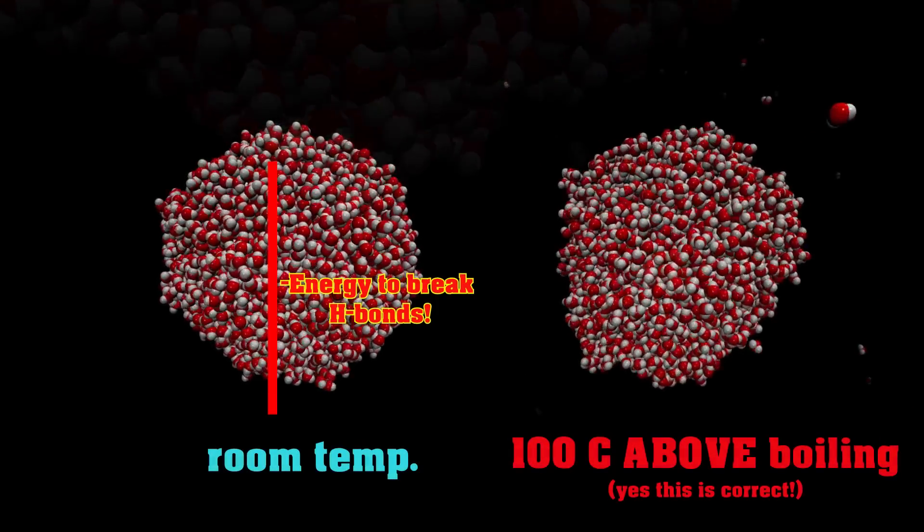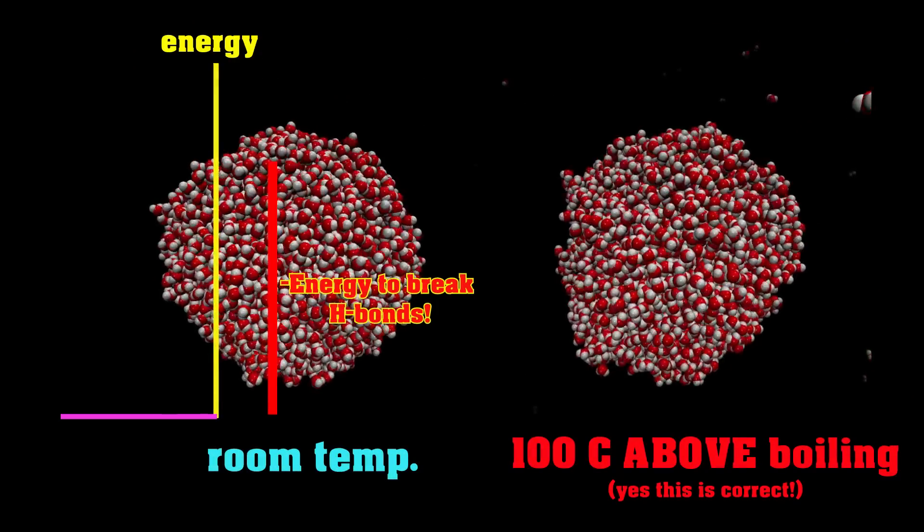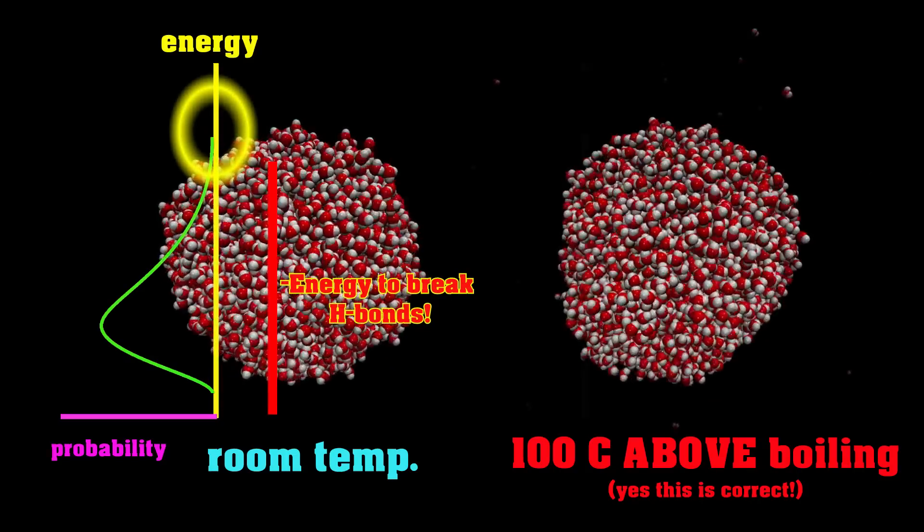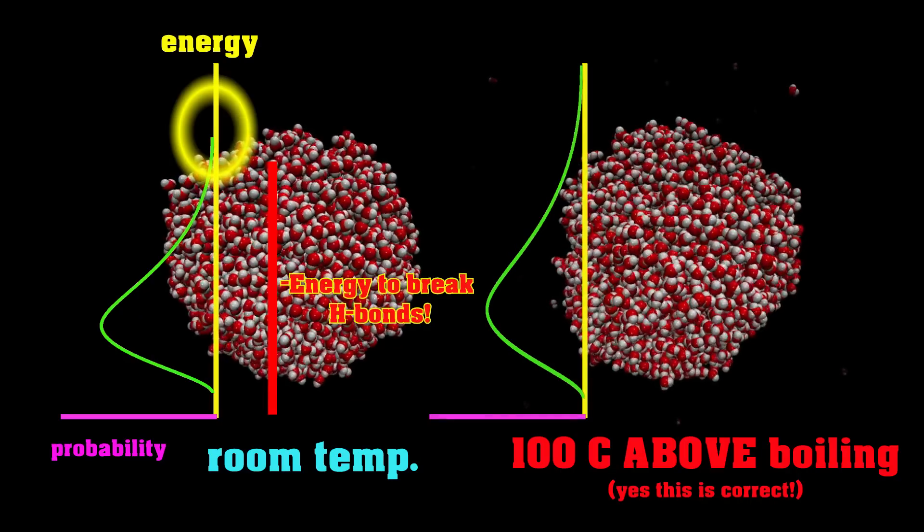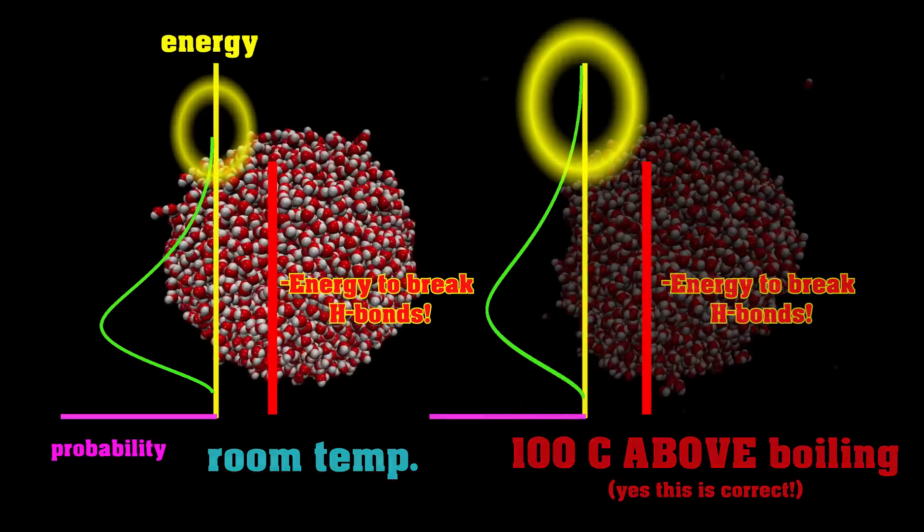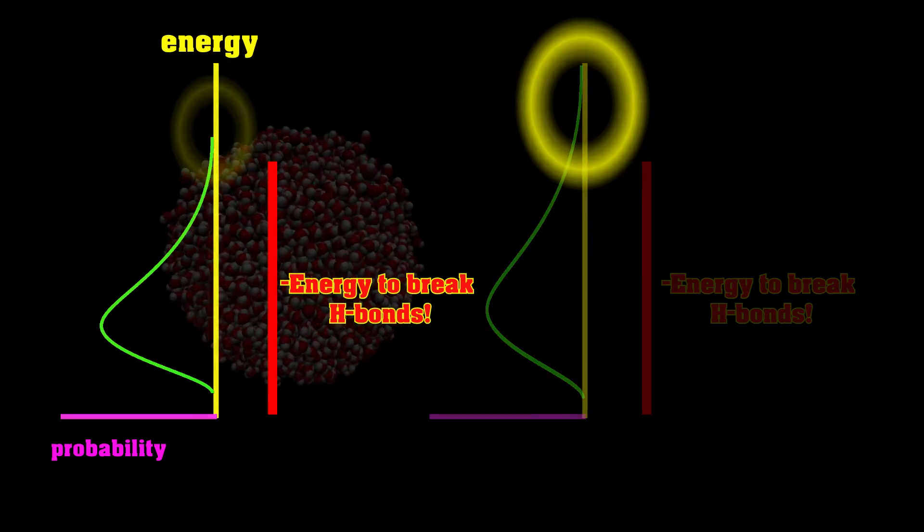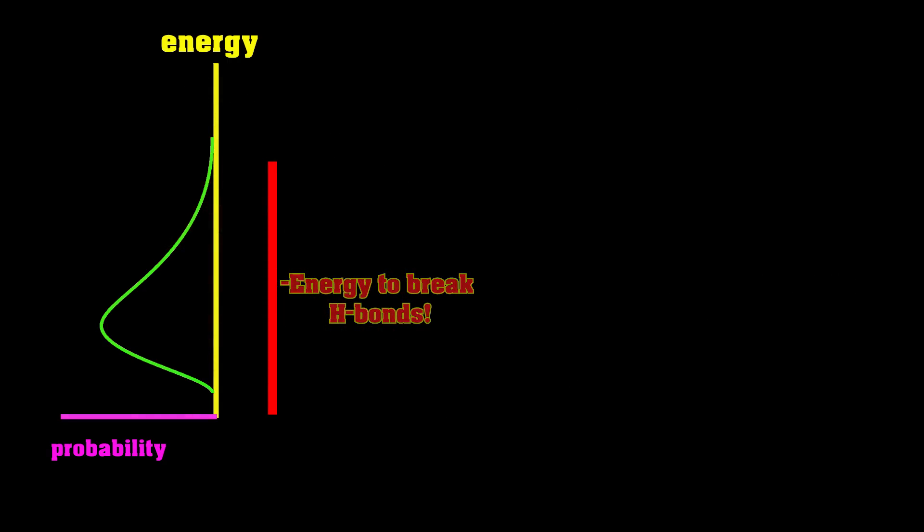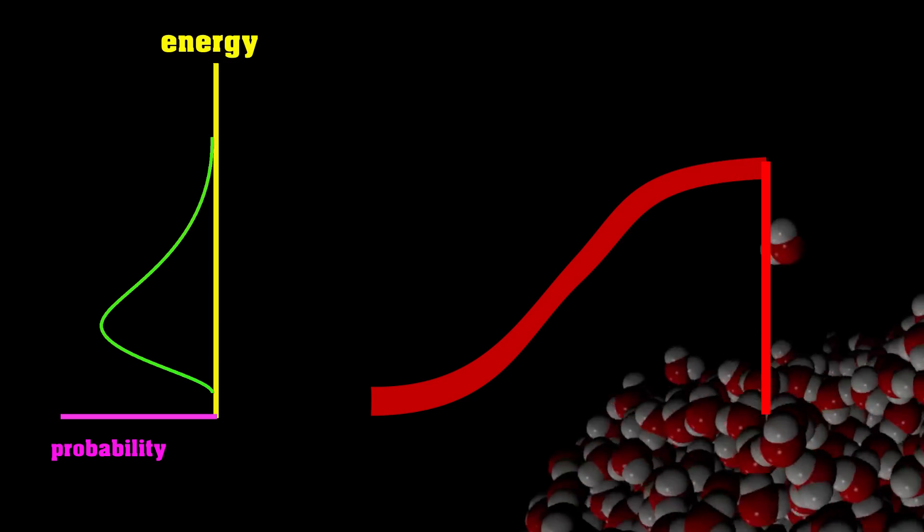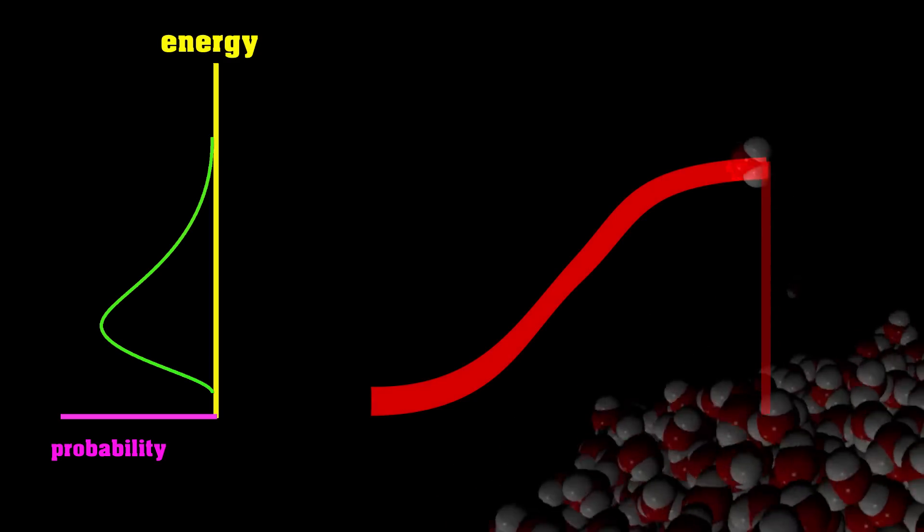But there's no real barrier to this process. So, if this is the amount of energy you need to leave, some amount of the waters will have that amount of energy and can evaporate. Unless it gets hotter, a greater fraction of the water molecules have that much energy. But, critically, there is no barrier. So, this is the energy of the water molecule stuck to the surface of the droplet. And then, if it's got enough energy, it can go up the hill and evaporate. But, critically, there is no barrier here.